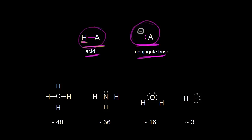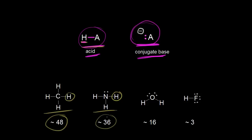Let's use that concept and look at these four compounds. We'll start with methane — the pKa for this proton on methane is approximately 48. For ammonia, the pKa for this proton is about 36. If we look at water, the pKa for this proton is about 16. And finally, for HF, this proton has a pKa of about 3.